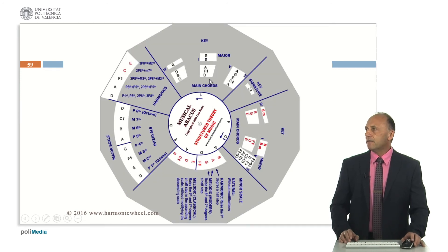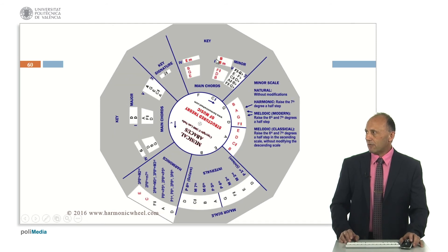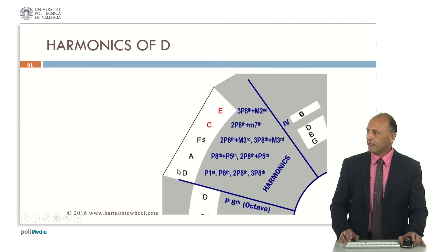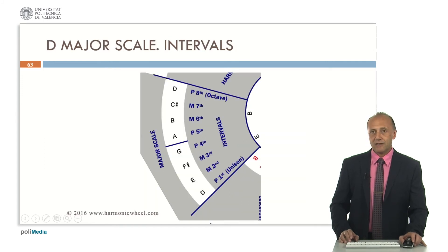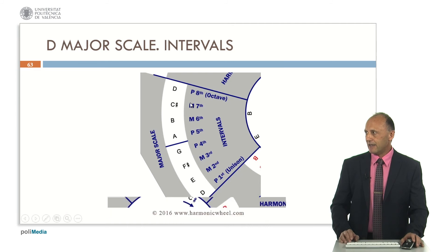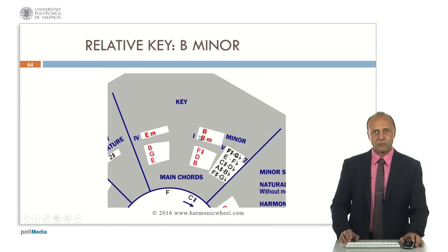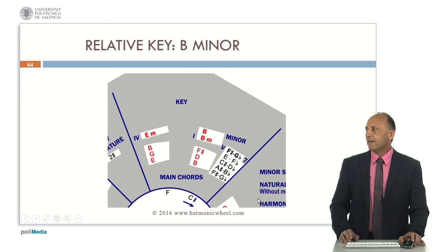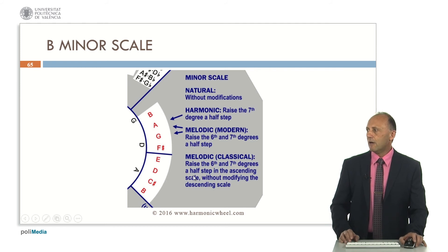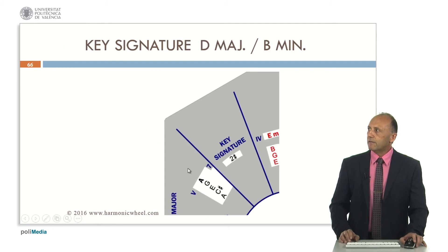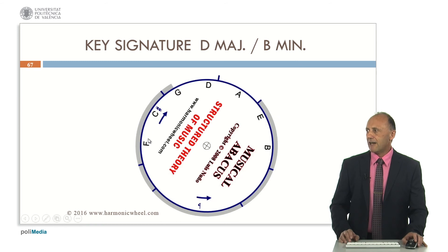If we start with a different note, for example D, we will obtain D major and its relative B minor. We start with note D and its harmonics, then we obtain the three main chords in D major, and by sorting the notes by their pitch we obtain the D major scale. In the case of the relative B minor, we cannot start with harmonics because the minor chord is made in an artificial way. So we have to first obtain the three main chords, and then by sorting the notes by their pitch we obtain the B minor scale, which may be natural, harmonic, or melodic. The key signature of D major and B minor contains two sharps, which are F and C, as you can see in this area of the abacus.